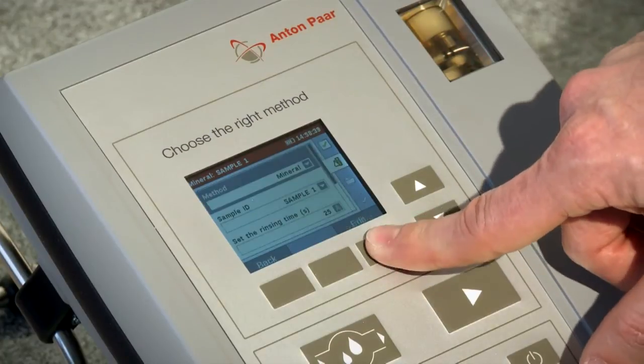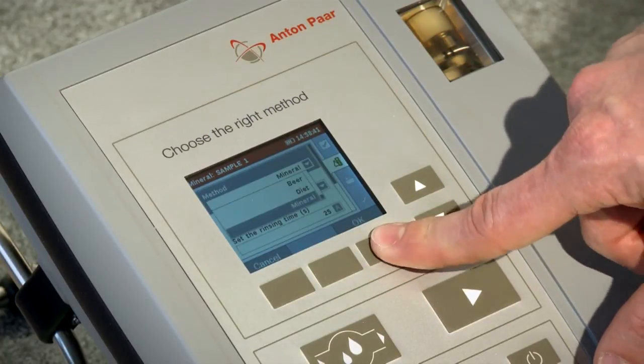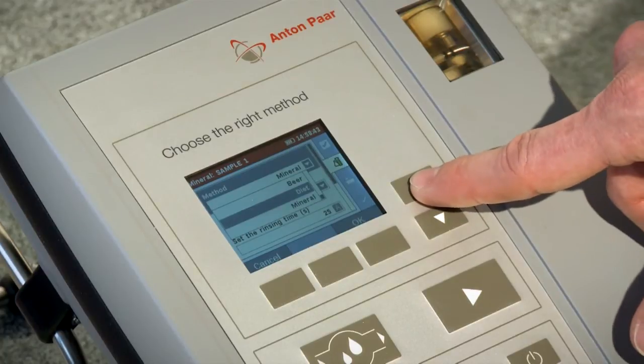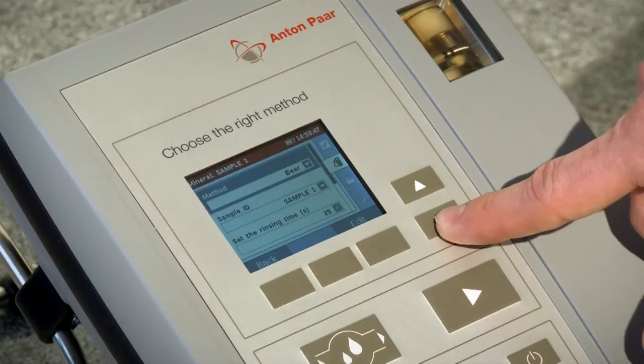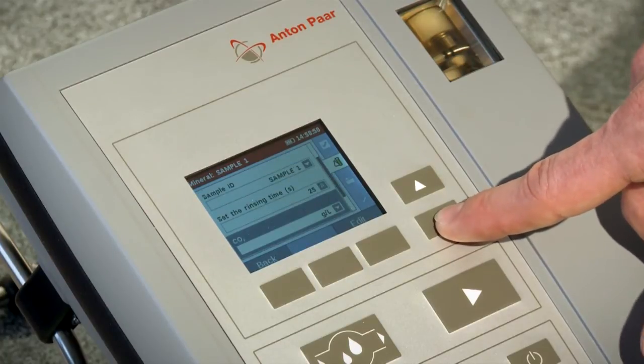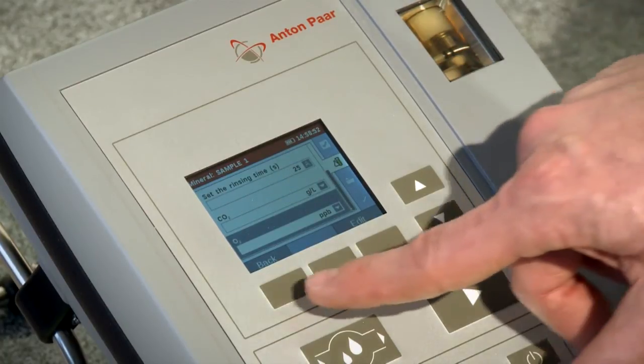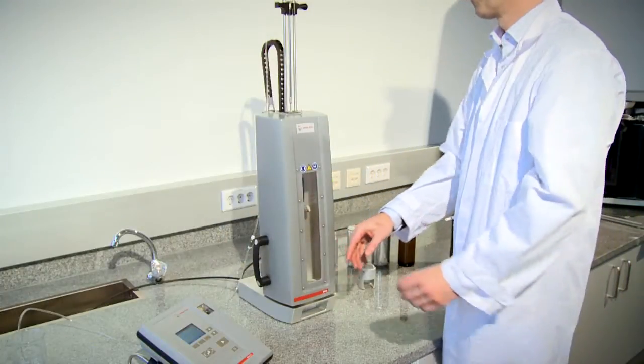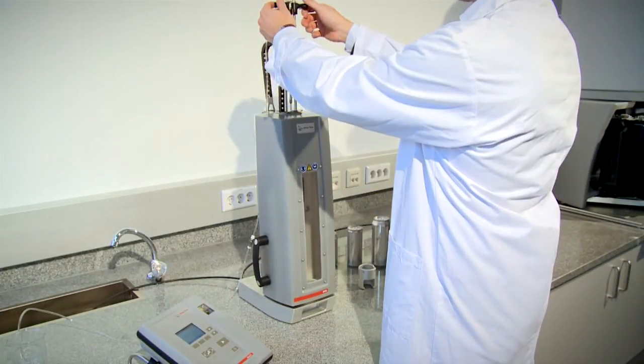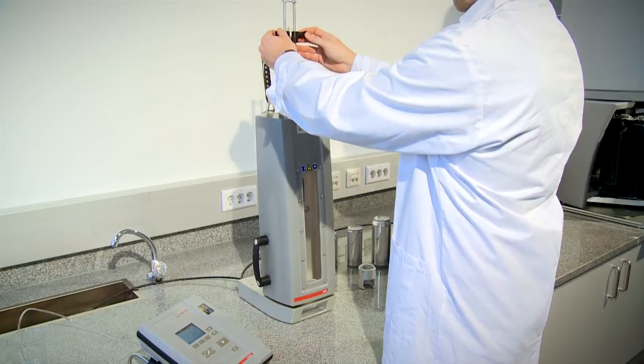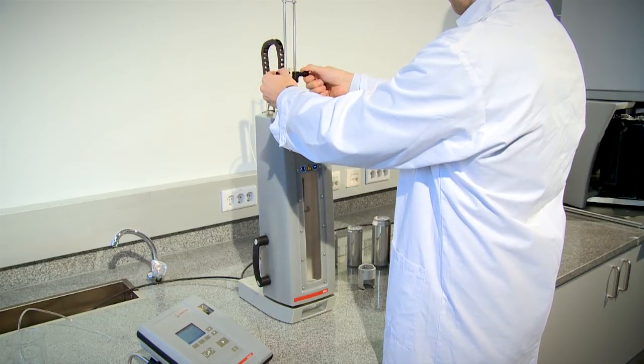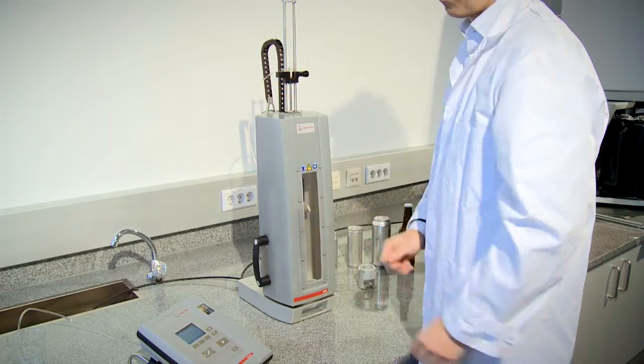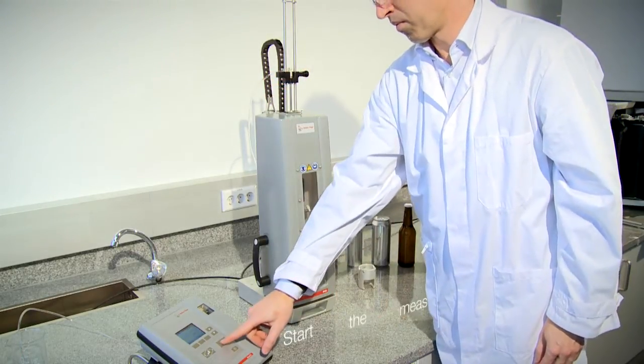Press the sample key on CBOX QC and select your method and further settings of choice. Be sure to set the appropriate rinse time. Insert the sample tube into the pierced container and secure the tube's position. Now you can initiate the measurement by pressing the start key.